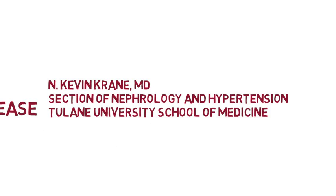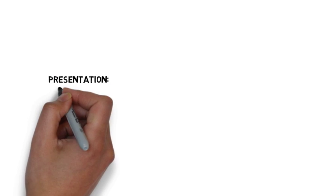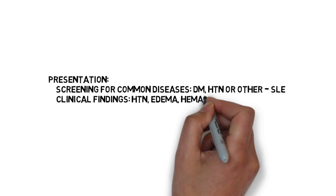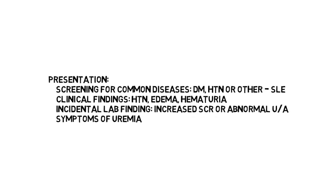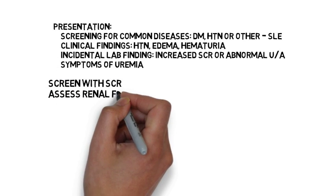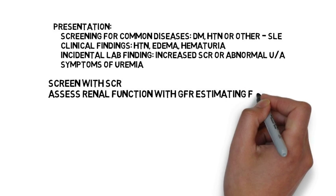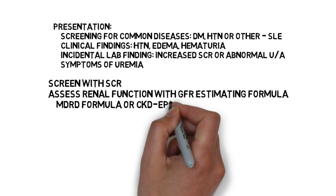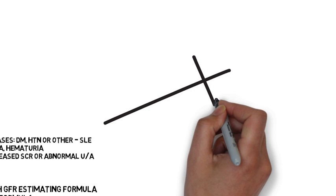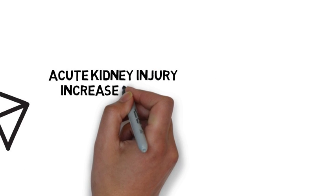We're going to begin by looking at how kidney disease presents. Commonly it can be seen as screening for common diseases, where there are clinical findings, sometimes in an incidental lab, and occasionally as uremia, but rarely as symptoms like flank pain. We screen with serum creatinine, and we assess renal function using functional formulas that look at the GFR, which is particularly important in chronic kidney disease.